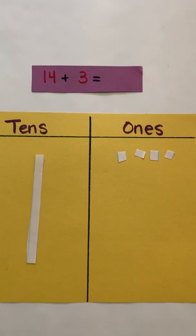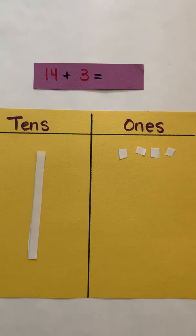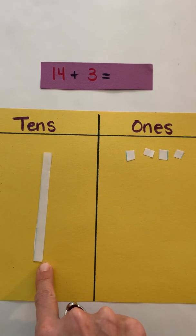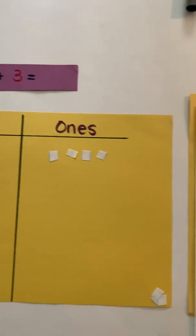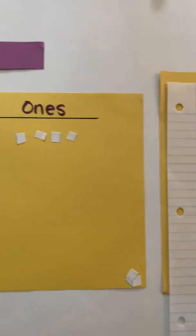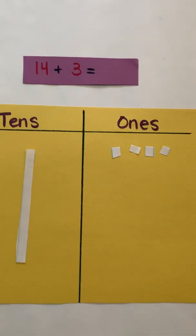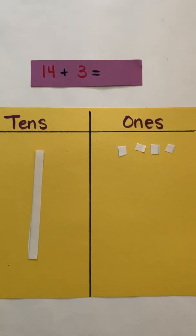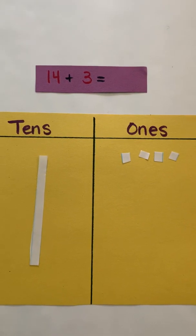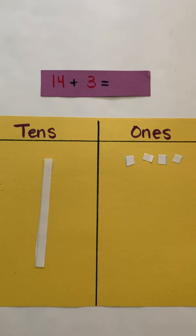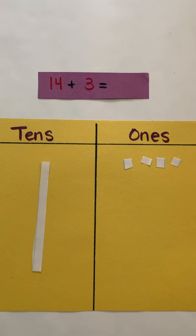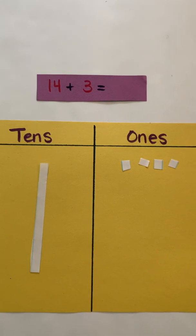One of the ways that we can do this is using base ten blocks. This is actually just paper that I cut from notebook paper, and I made them long strips to represent the tens and then I cut out little squares to represent my ones. So you can definitely make those on your own and use those as a manipulative to help with this understanding of a two-digit addend plus a one-digit addend.